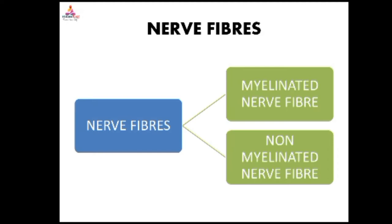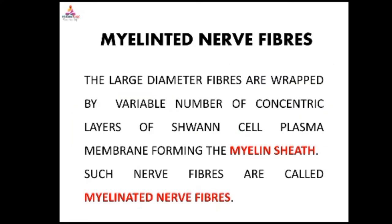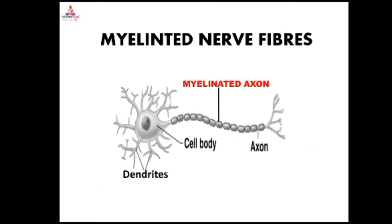Nerve fibers are divided into two categories: myelinated nerve fibers and non-myelinated nerve fibers. Myelinated nerve fibers: the large diameter fibers are wrapped by a variable number of concentric layers of Schwann cell plasma membrane, forming the myelin sheath. Such nerve fibers are called myelinated nerve fibers. The axon is covered by the myelin sheath.